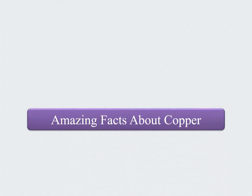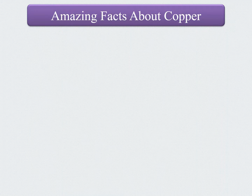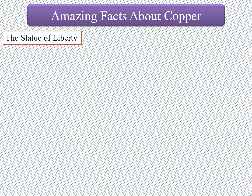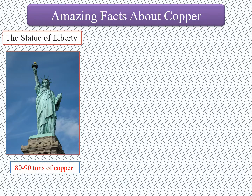We will start with a few amazing facts related to copper to see its importance and ancient applications. First is the Statue of Liberty in New York, which was a gift of friendship from the people of France to the United States. This statue is made up of 80 to 90 tons of copper, and the green layer observable on the statue is copper sulphate that forms on the surface of the metal due to corrosion.